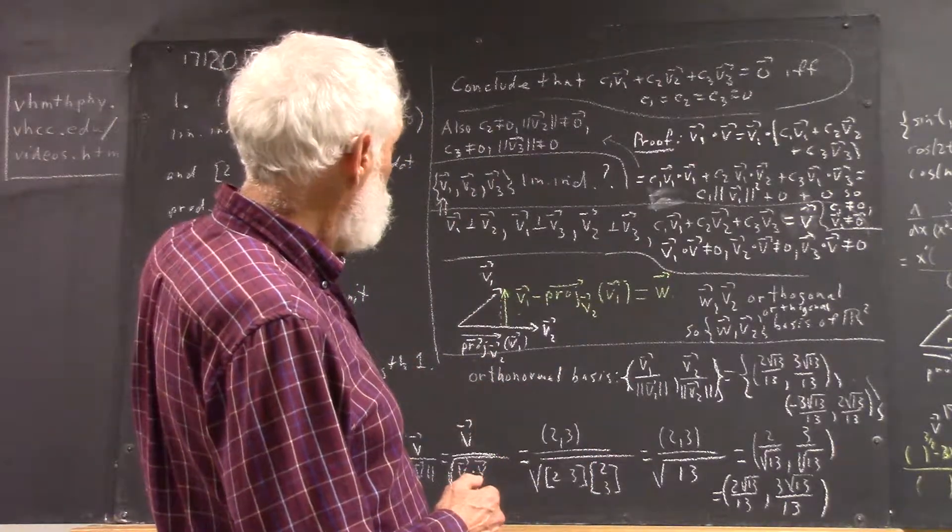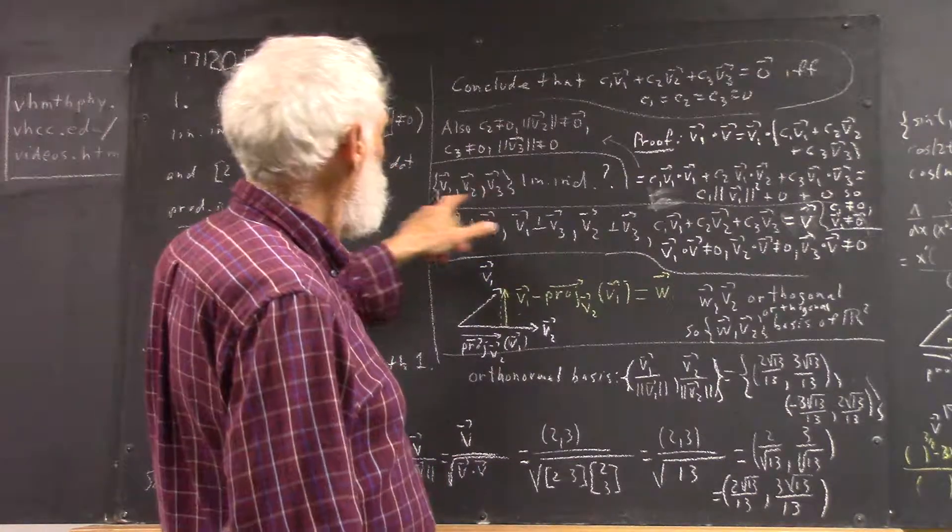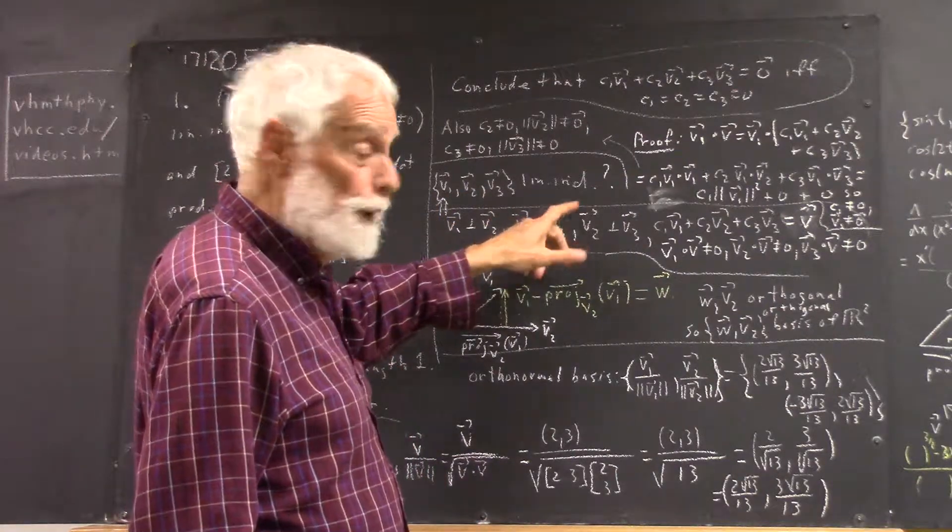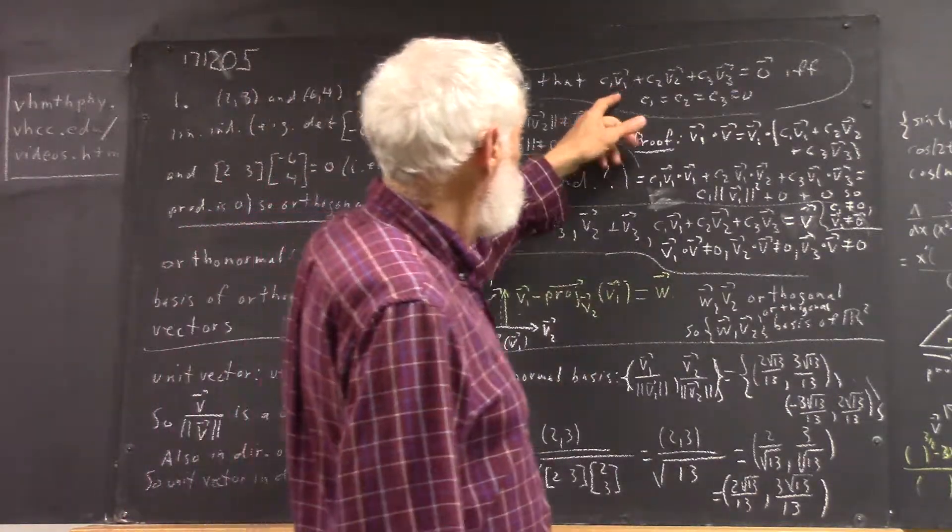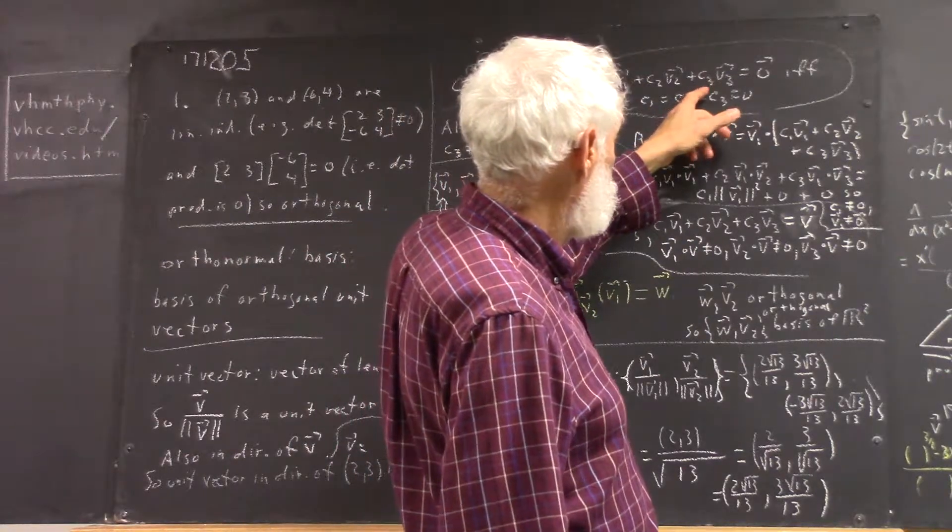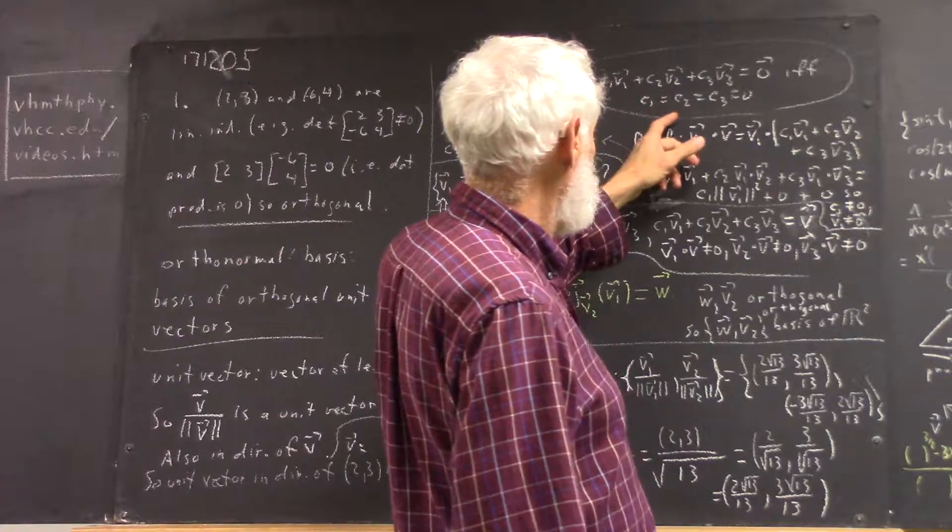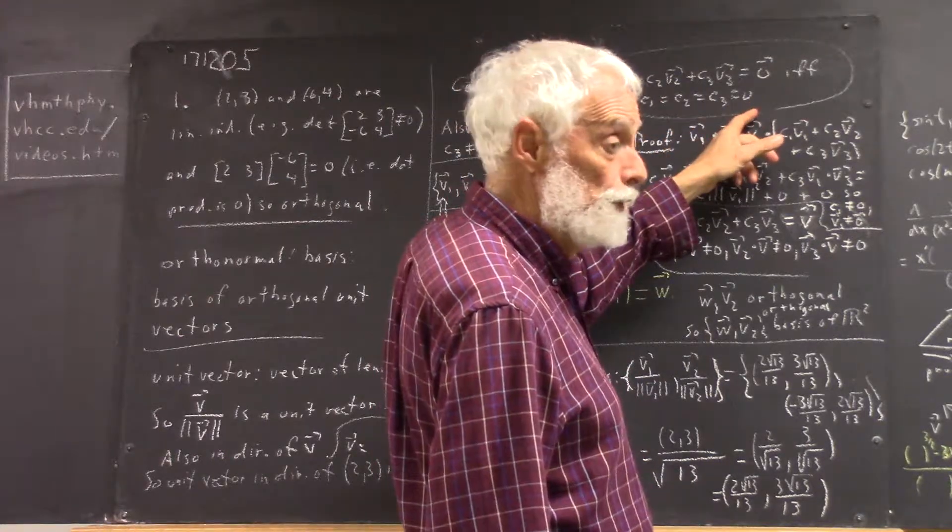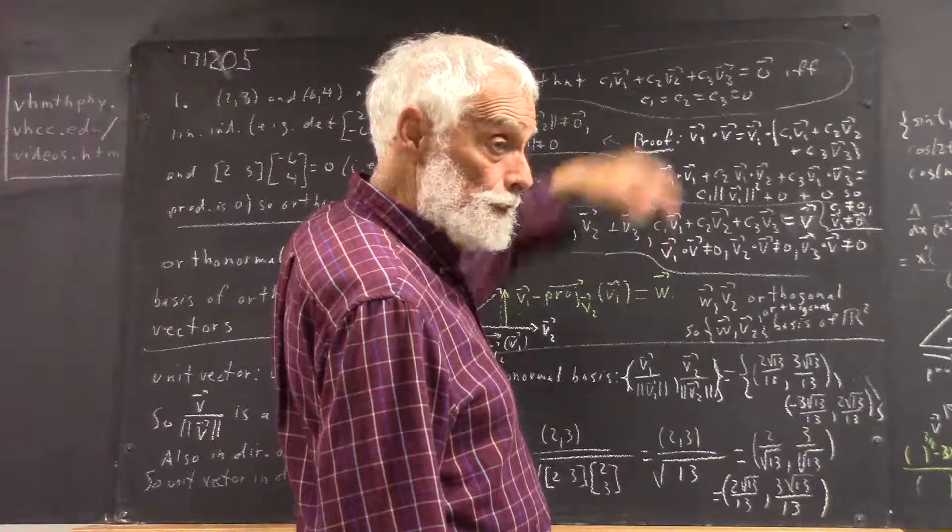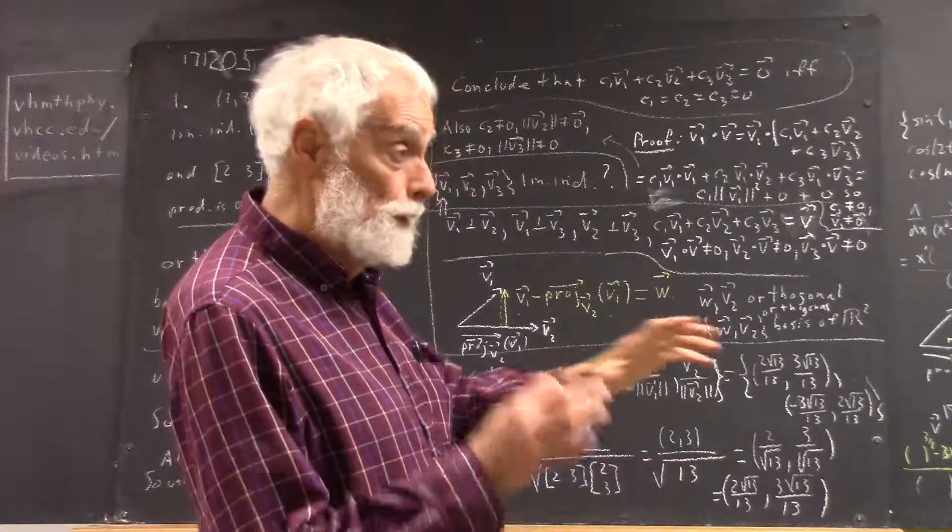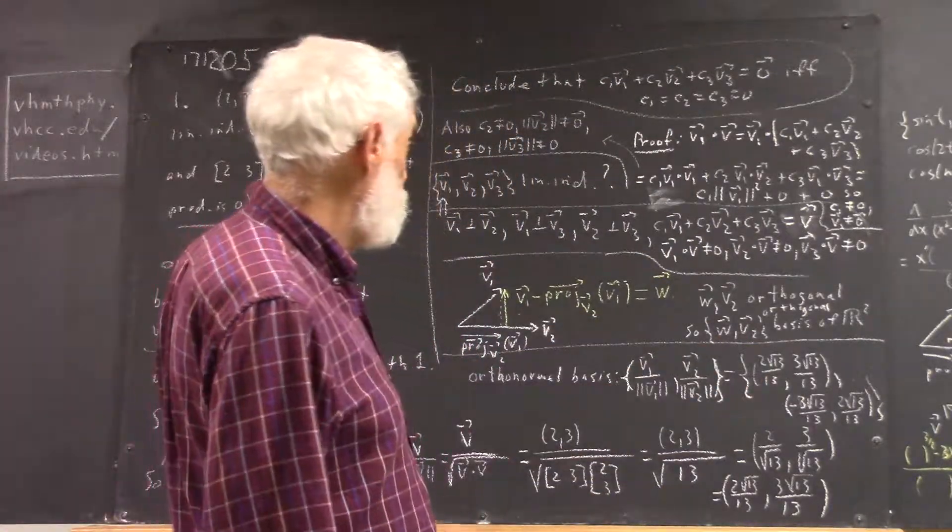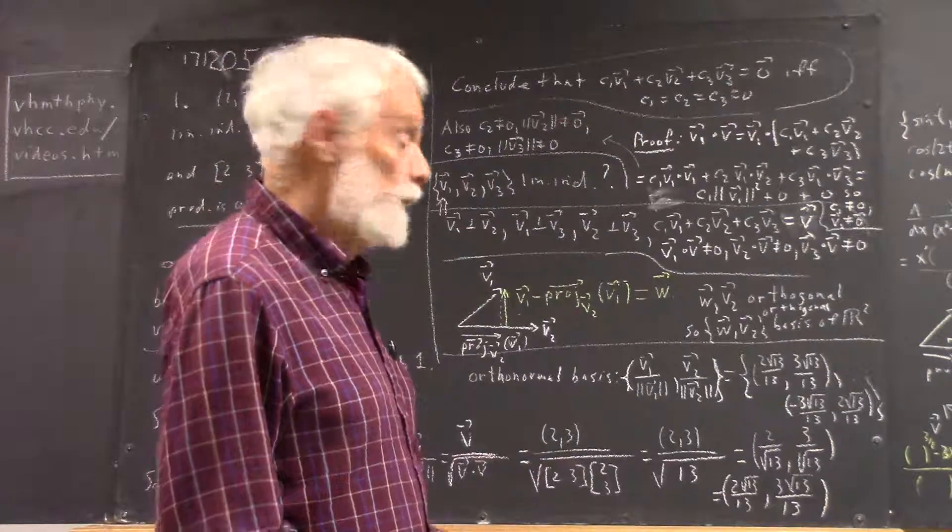We want to conclude that these three vectors are linearly independent, which means that c1·v1 plus c2·v2 plus c3·v3 can equal zero if and only if c1 equals c2 equals c3 equals zero. So can we use these ideas, perhaps modify them a little bit, perhaps make them a little more specific, to prove the linear independence?